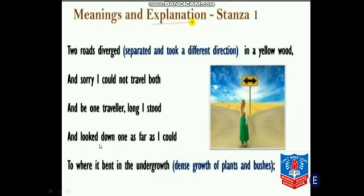He says 'and looked down as far as I could' — he is supposed to choose only one road, so he looks as far as his eyes can see to find which path could be a better option or which could make his future brighter. 'To where it bent in the undergrowth' — undergrowth here means dense growth of plants and bushes, referring again to the forest. And what he sees is that both roads look alike even from a distance.